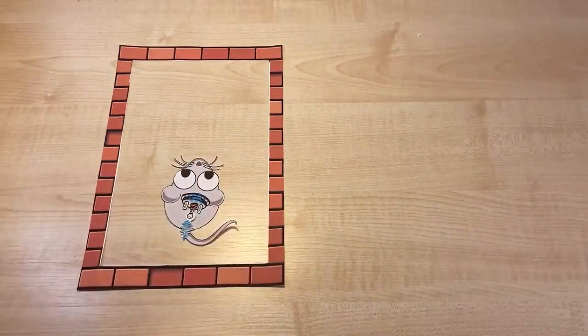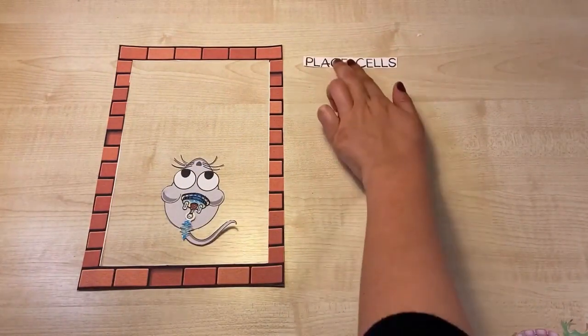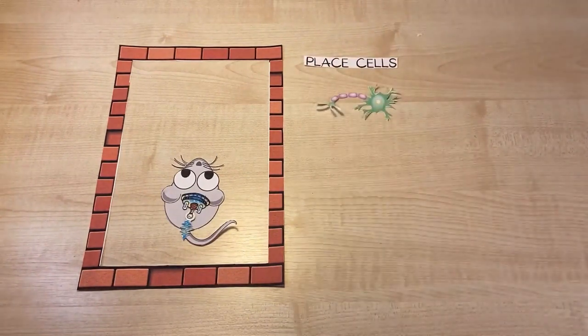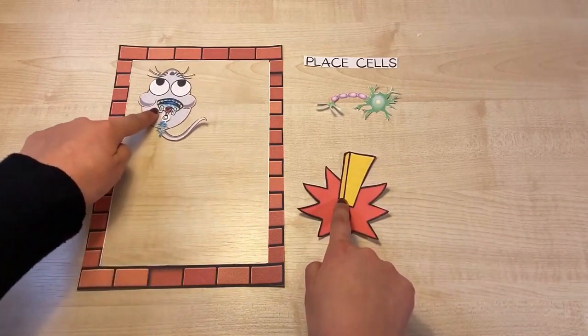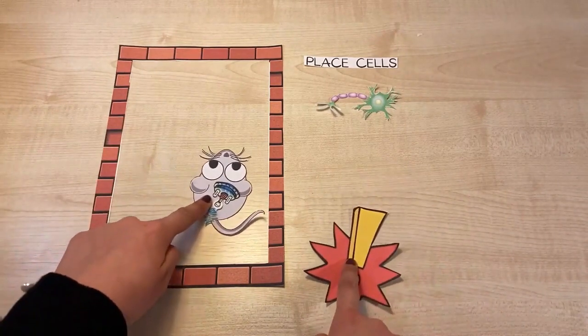The first type of cell that helps us move around are place cells. Place cells encode self-location, firing only in particular environments. They remap when we are in a different place.